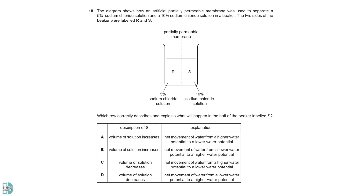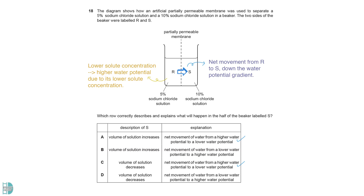5% sodium chloride solution has a high water potential due to its lower solute concentration. So there is a net movement of water molecules from R to S by osmosis, down the water potential gradient. This results in an increase in the volume of S.